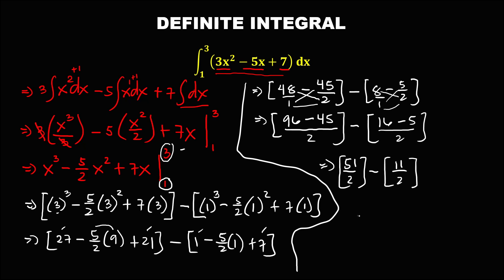Since the denominators are the same, we can subtract the numerators: 51 minus 11 is 40, over 2. Therefore, this equals positive 20.